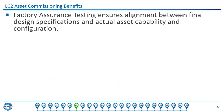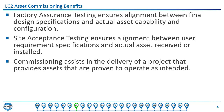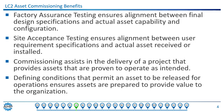Here are the benefits associated with the processes that belong to asset commissioning. Factory assurance testing ensures alignment between the final design specification and the actual asset capability and configuration before it's installed on site. Site acceptance testing ensures alignment between the user requirement specifications, the design, and actual assets that are received and installed on the site. Commissioning assists in the delivery of a project that provides assets proven to operate as intended. And defining conditions that permit an asset to be released for operations ensures that assets are prepared to provide value to the organization.